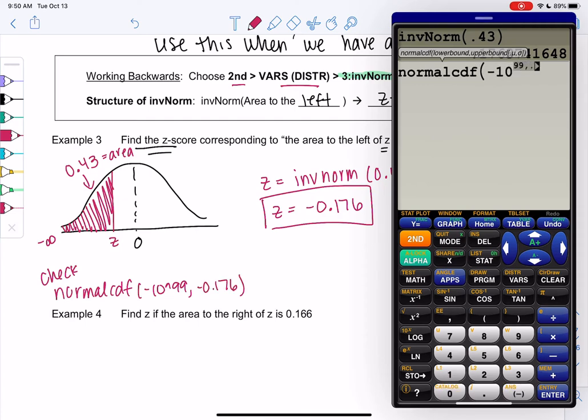So they're just convincing you that these are opposites of each other. Yep, 0.43. A little off because of rounding.